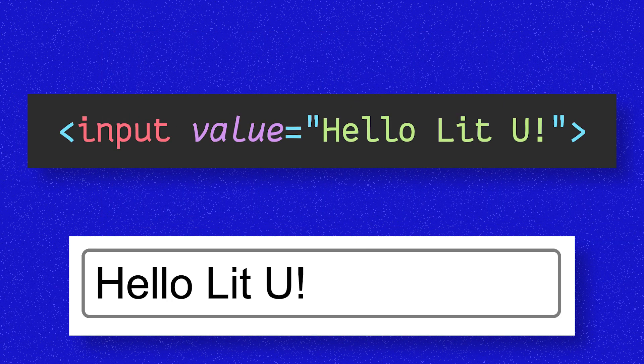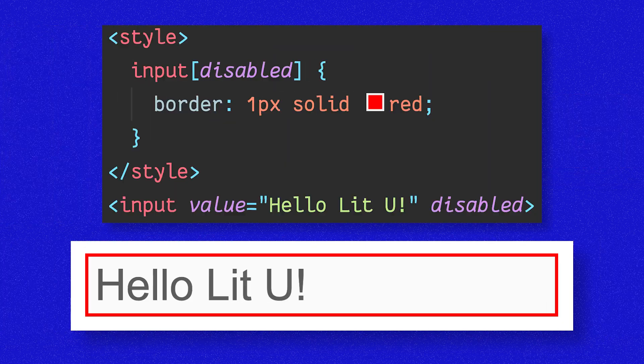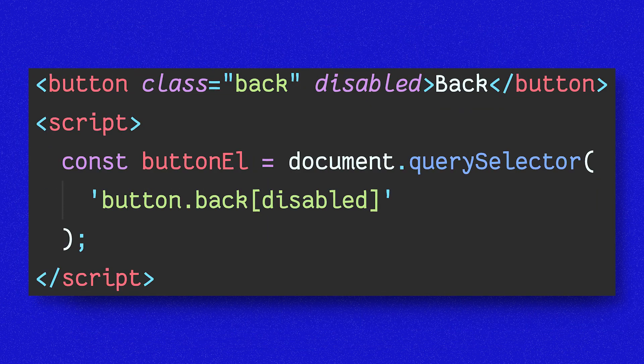Attributes are also very good for statically initializing, like setting the default value on an input. They're good for styling — you can select an element by its attribute by enclosing the attribute in brackets. And they're good for querying in JavaScript, which will find and return a reference to the element. Attributes allow you to declaratively define the characteristics of your elements in a nice, readable manner. One place where attributes do lack, though, is that they only allow passing strings and Booleans around. This is where properties come in.